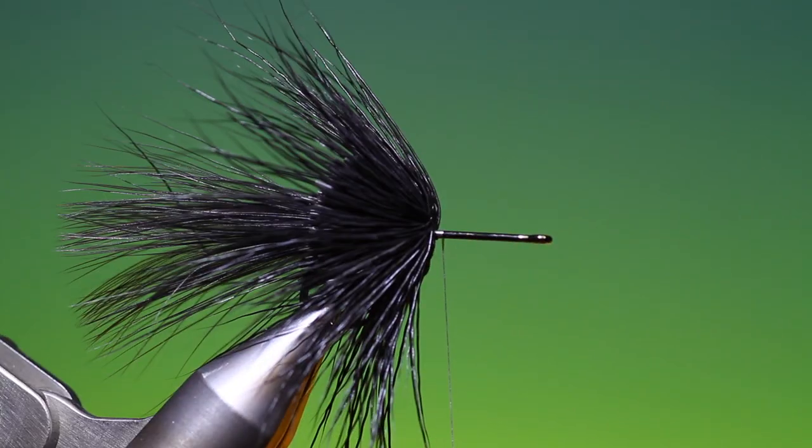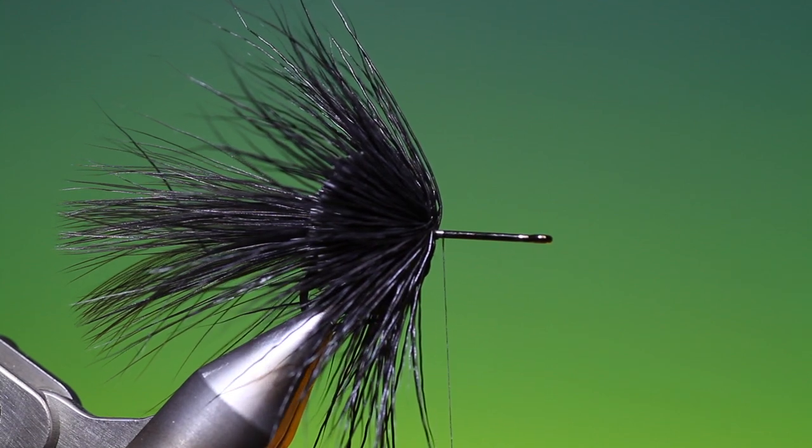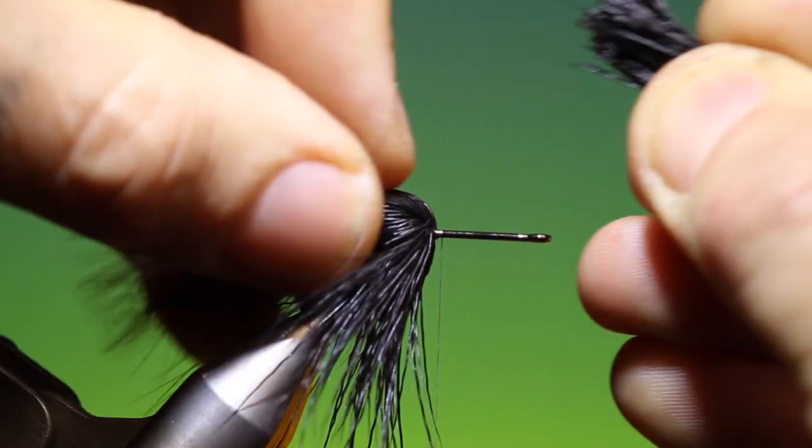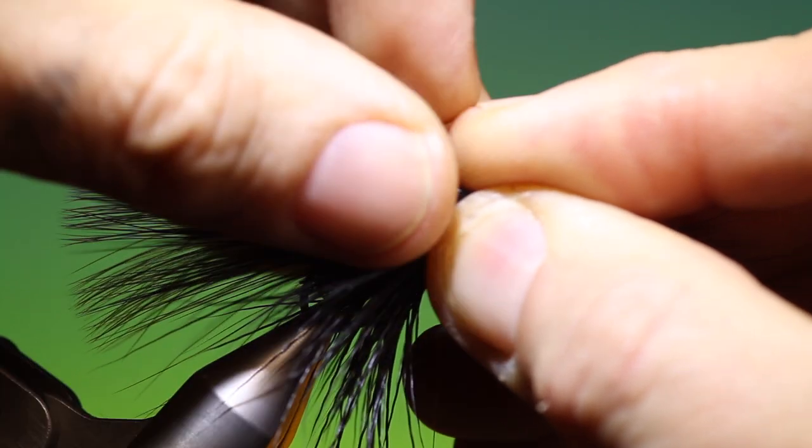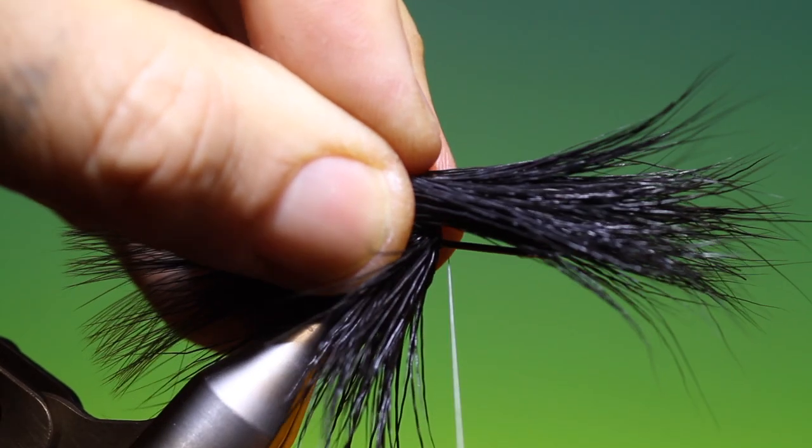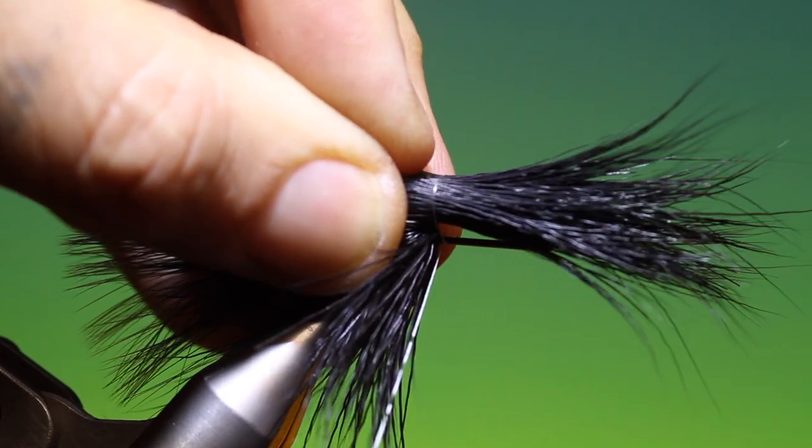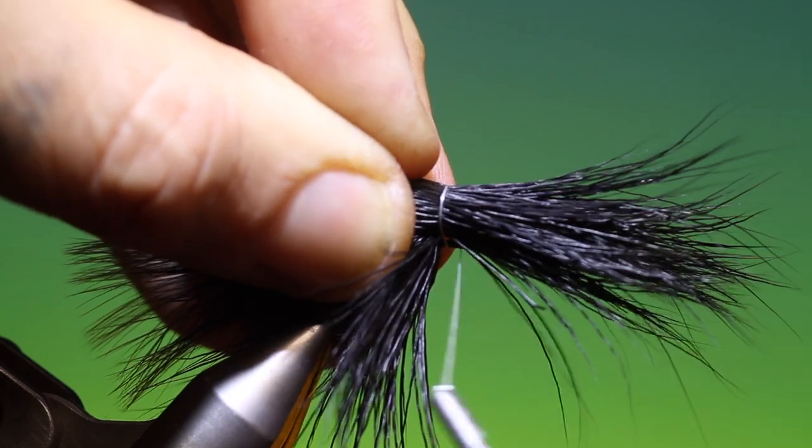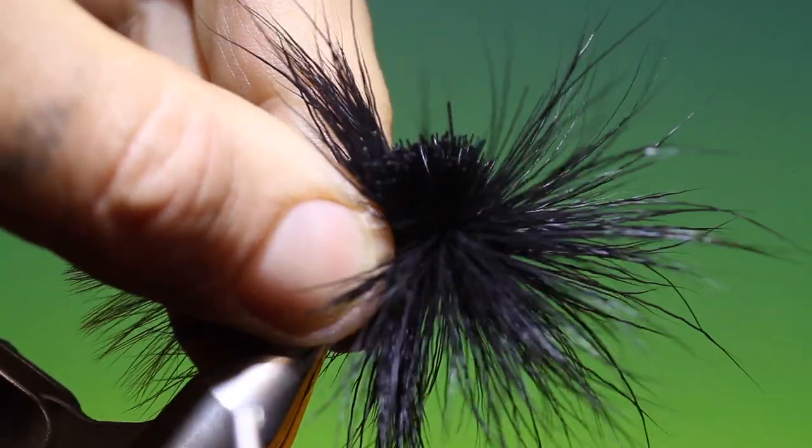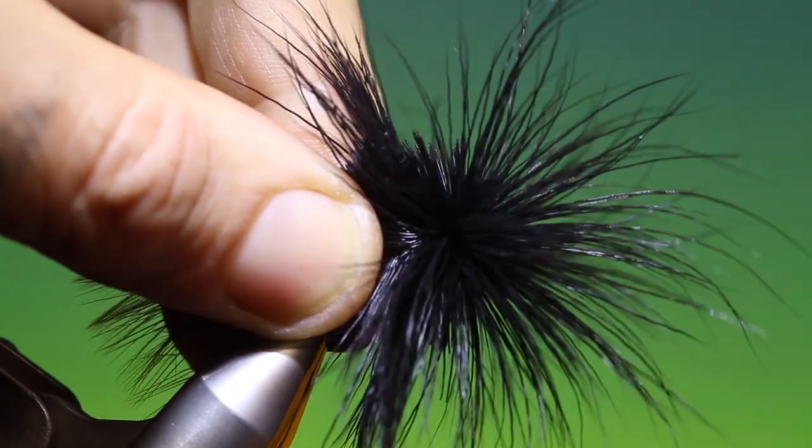A little ways forward and another bunch. Remember to clean and stack these bunches before you tie them in. Again once, twice, tightening. Now we can let it spin.